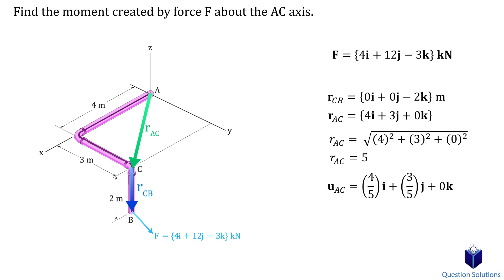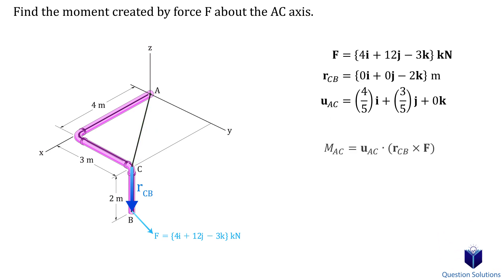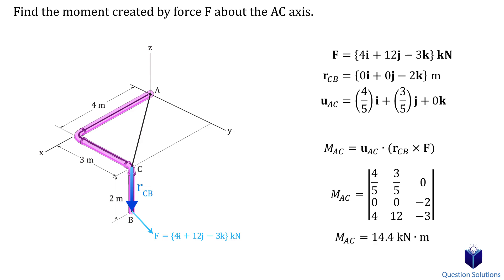We divide each component of the position vector by the magnitude to get our unit vector. Now we plug everything into our equation. Solving gives us the moment about the AC axis. Note that if you use the position vector from A to B, the only part that changes is the middle row — the components of the position vector.